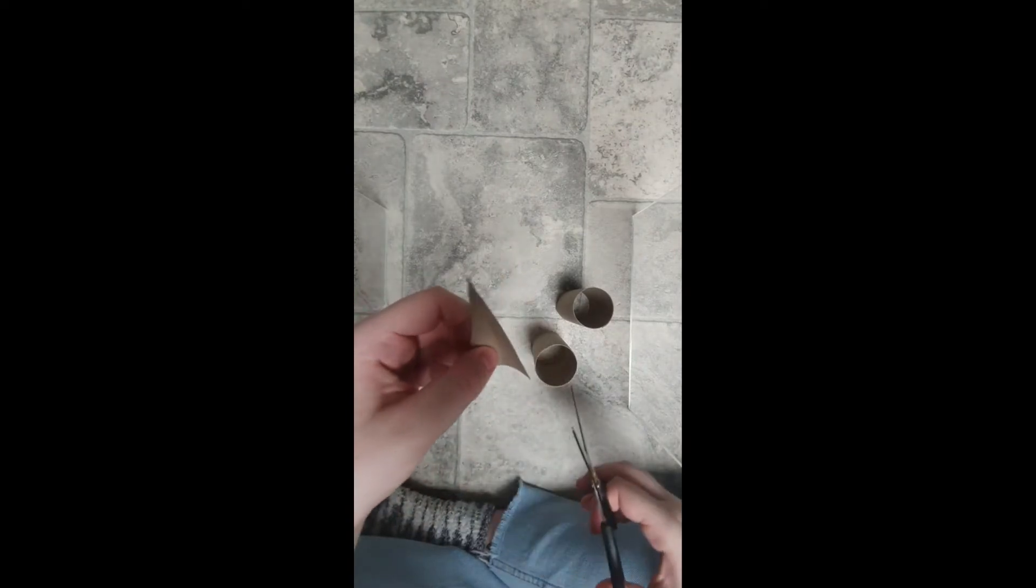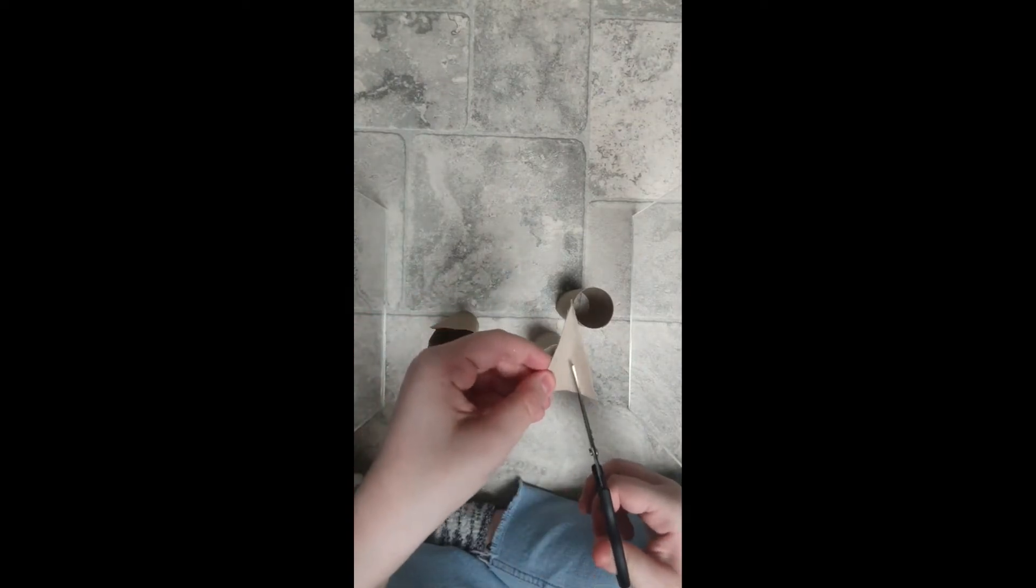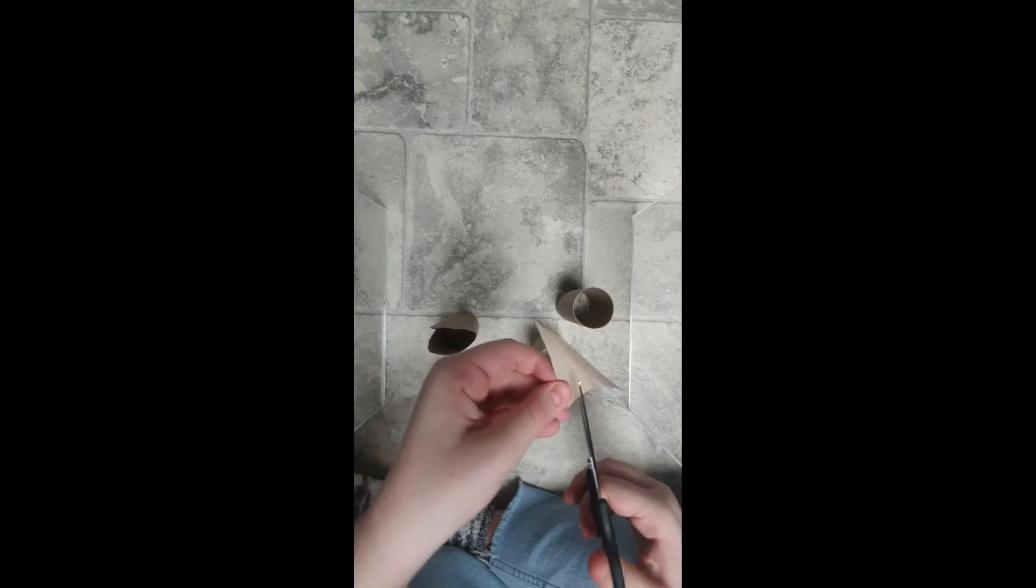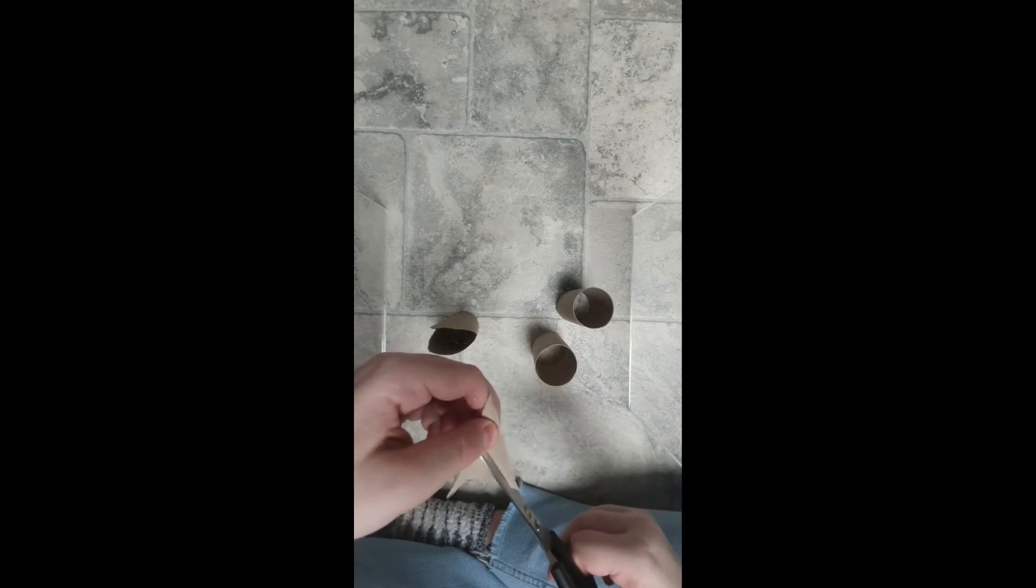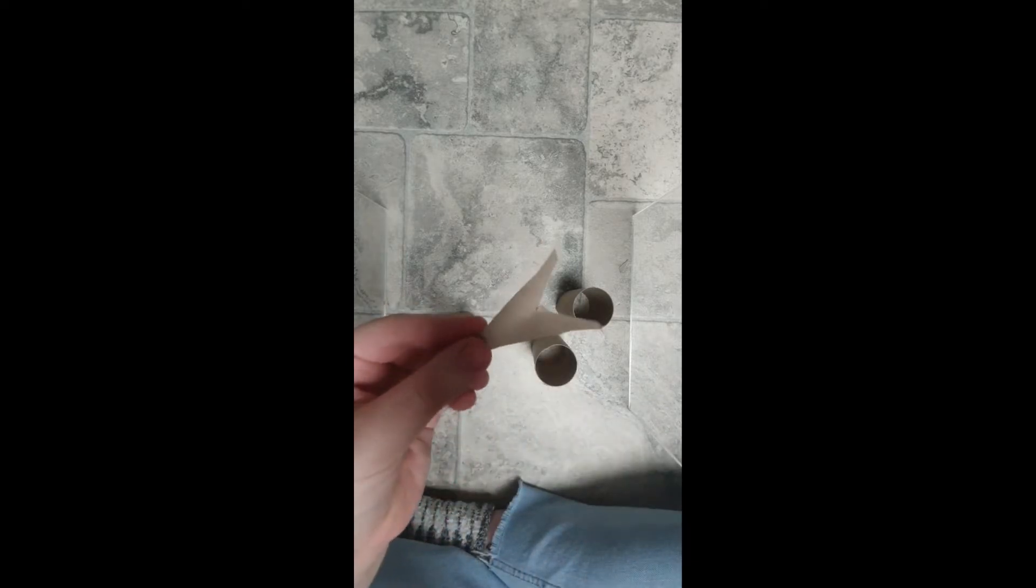Then with the spare bit, gonna cut a little V. Get a parent's help with this because it's difficult, so you've got a little V looking like that, like a little snake's tongue.